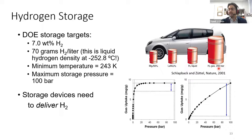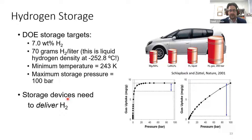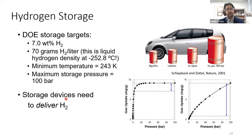The Department of Energy set out certain storage targets. In terms of engineering these materials, we need to think about the deliverable hydrogen or working capacity of the material. If you have a material that interacts very strongly, you'll saturate your isotherm very quickly, but some pressure will be left over in the tank, so the actual working capacity is very small compared to a material that doesn't interact quite as strongly but still achieves large capacity.